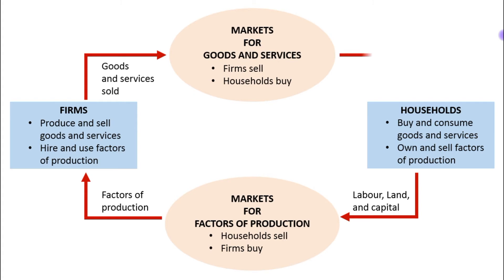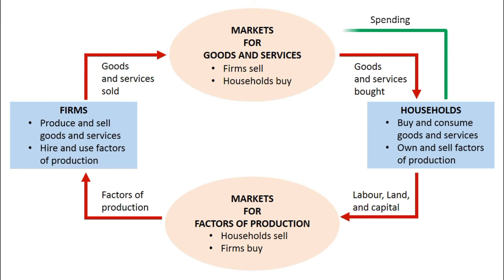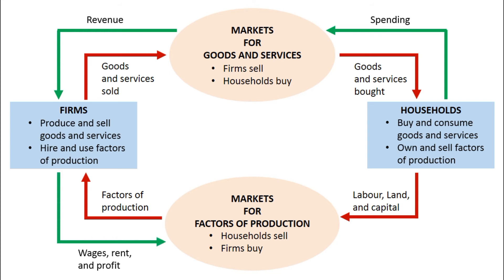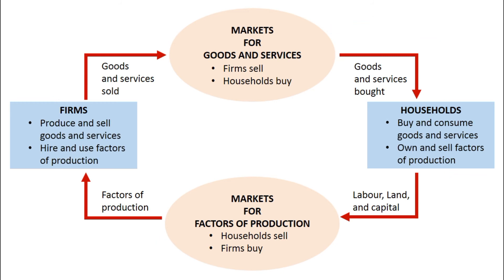Households buy the output of goods and services that firms produce. The households spend money to buy goods and services from the firms. The firms use some of the revenue from these sales to pay for the factors of production, such as wages of their workers, and what's left is the profit of the firm owners, who themselves are members of the households. So this will be the income for the households.